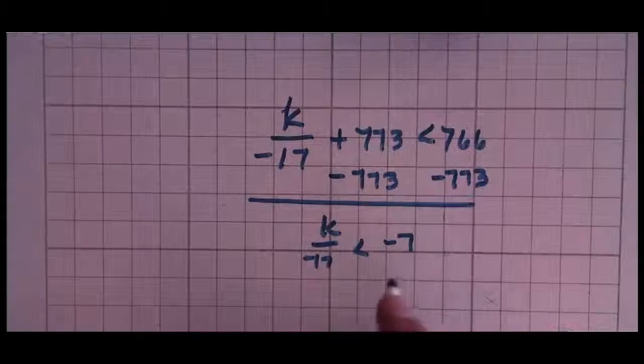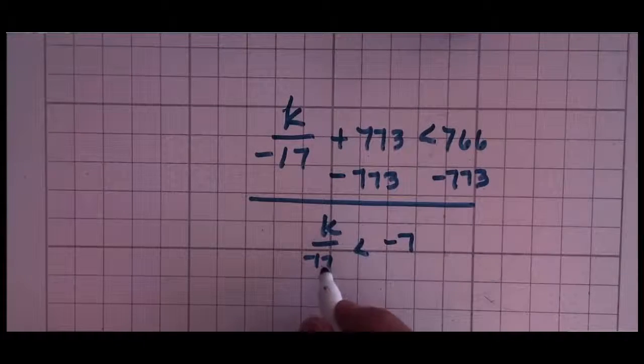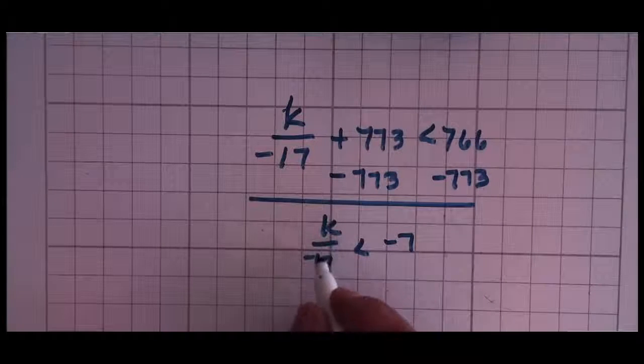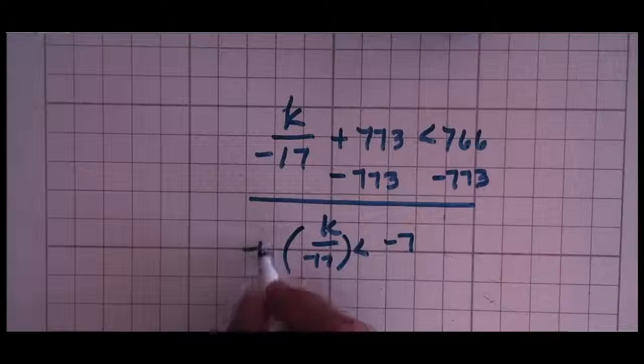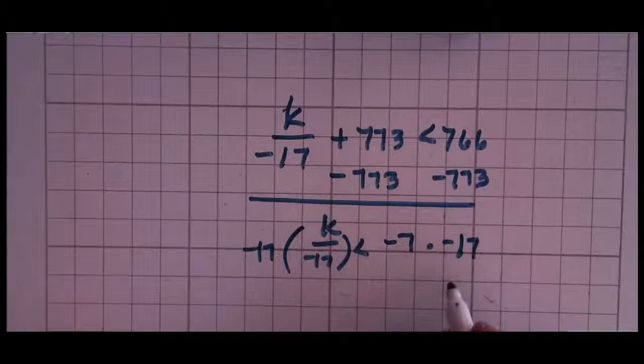Well, suddenly it seems like a little bit easier of a problem because negative 7 is a whole lot smaller than those. But I still have this negative 17 here. That's a division, k divided by negative 17. So to get rid of division, I use multiplication.